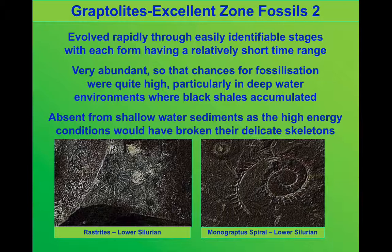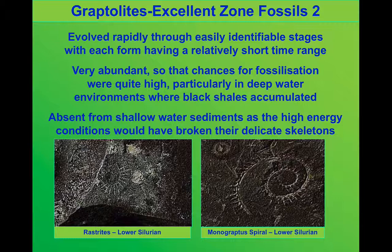They're incredibly useful as zone fossils. They have some of the key characteristics: they evolved rapidly, and we can identify the stages through which they evolved quite easily. Each type only survived for a short period of time before it became extinct. They're very abundant — almost wherever we find black shales, we can find some Graptolite fossils. Although we do struggle to find them in shallow water settings, just because the energy conditions would have destroyed the animals before they became fossilised.